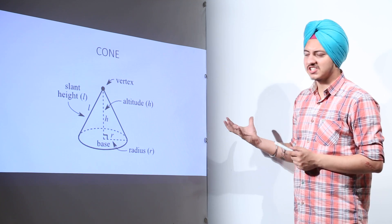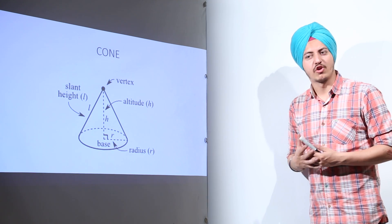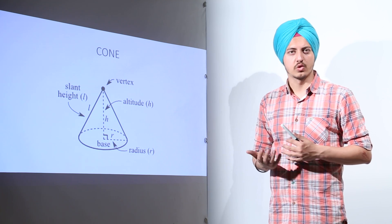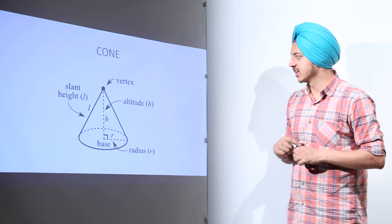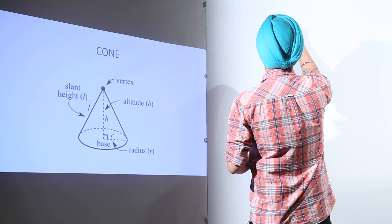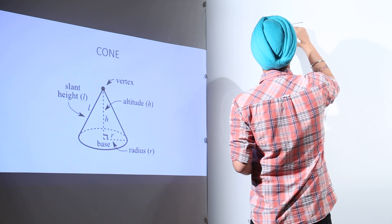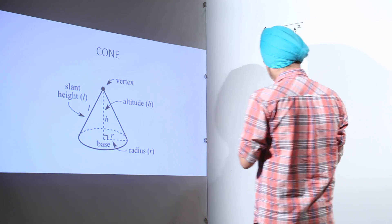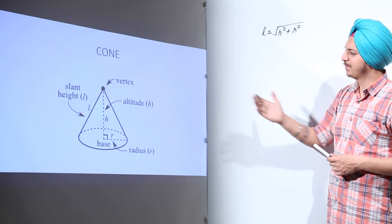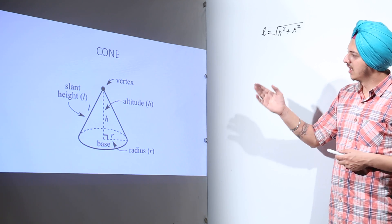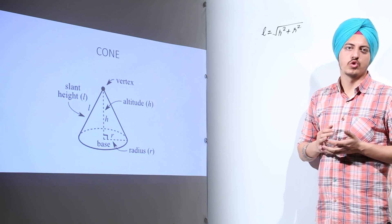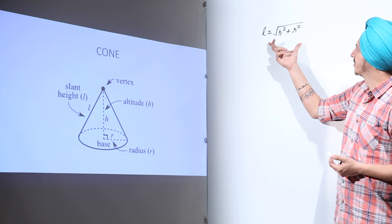These are the key terms for a cone. Now I will cover the formulas for the curved surface area, total surface area, and volume. First, there is a relationship between the slant height, the altitude, and the radius: the slant height L is equal to the square root of H squared plus R squared, simply by the Pythagoras theorem, because H and R make a right angle.